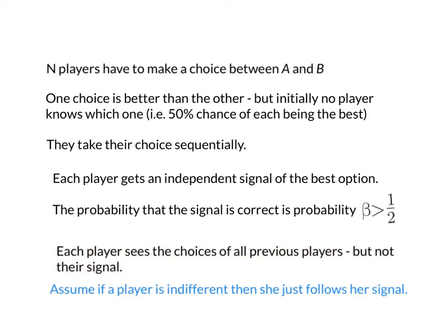We're going to have one simplifying assumption: if a player is indifferent between A and B, then she will just follow her signal. So if she's indifferent but has received a signal that says B is better, she will choose B. If she's indifferent but has received a signal that says A is better, she'll choose A and follow her signal. That just avoids some complications.